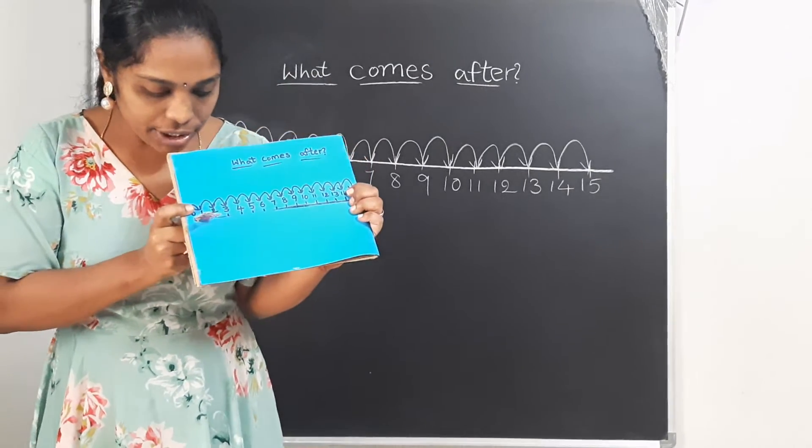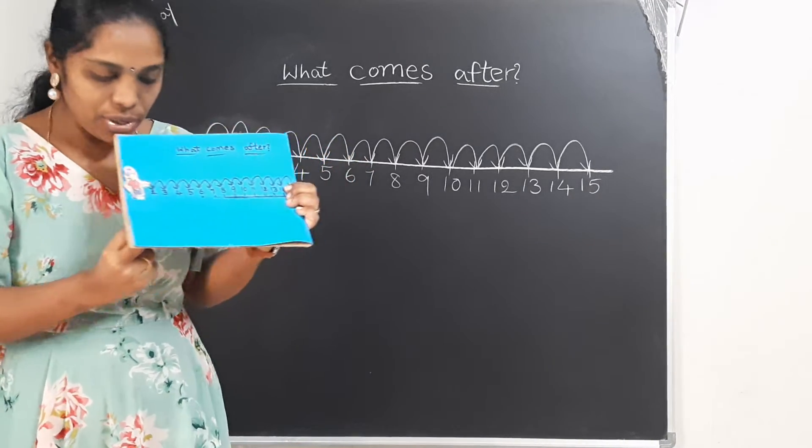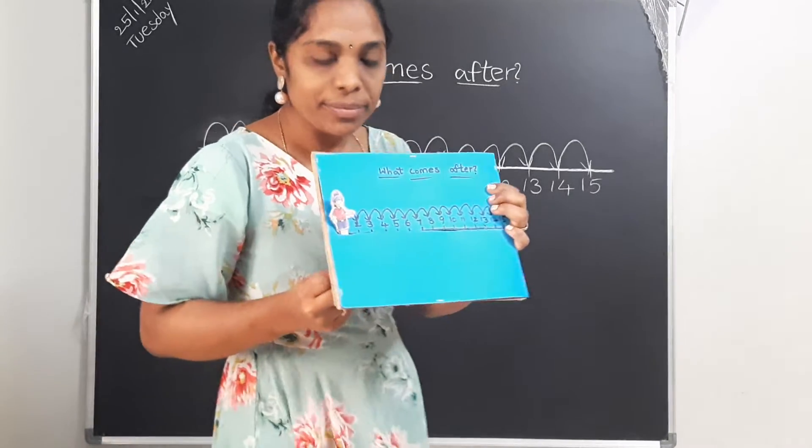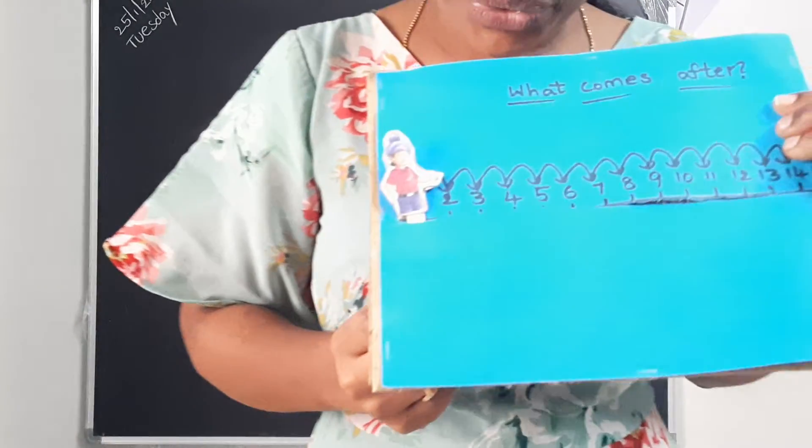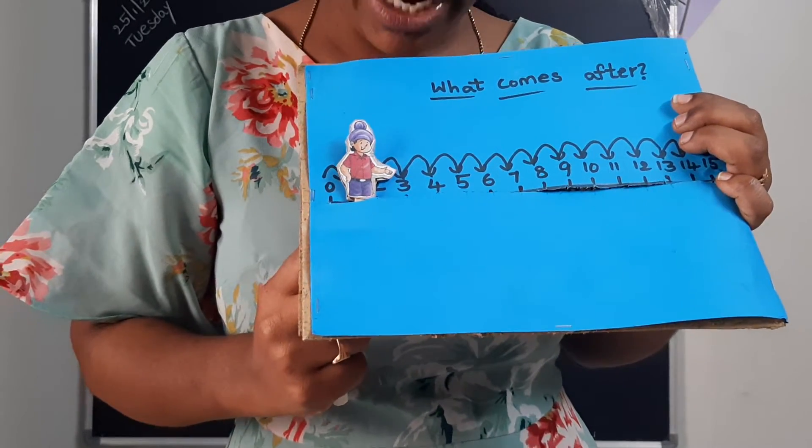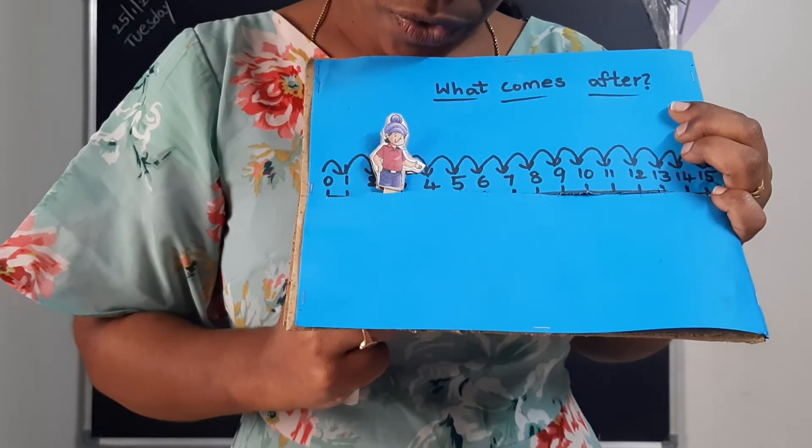Here I am starting with 0. 0 after 1. Let us see. He was showing you the after numbers. 1 after 2, 2 after 3. Just look at his left hand. He was showing the after numbers. 3 after 4.